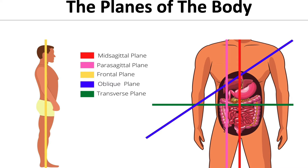We have the oblique plane, which is kind of the odd, unusual plane — it's not like any of the others. The transverse or horizontal plane is the plane that divides the body into the upper and lower regions.